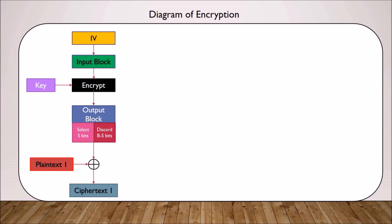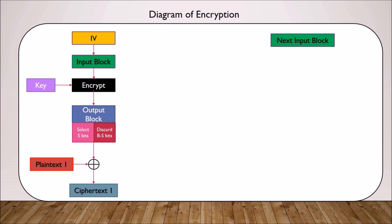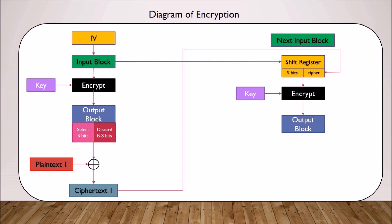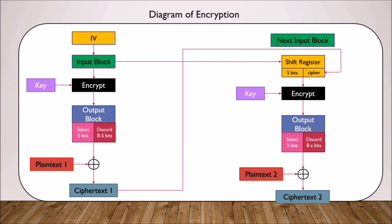Now the first cipher text has been obtained. The next input block is needed in order to get the next S bits of cipher text. The input block of the previous step will be shifted left by S bits, using the leftmost S bits as the new input block. The cipher text of the previous step will be reused as the rightmost bits of the new input block. Encryption will then proceed and produce the output block. The S bits of the output block and the next S bits of the plain text are XORed, producing cipher text. This process will be repeated until all of the cipher text has been obtained.